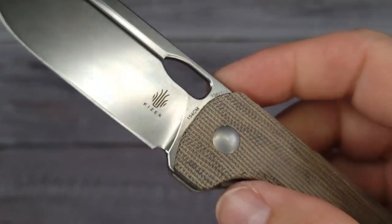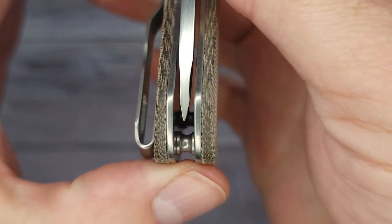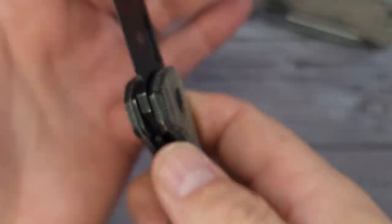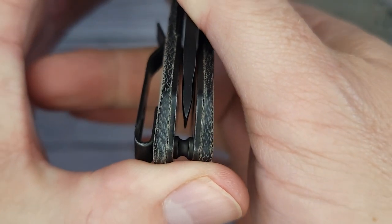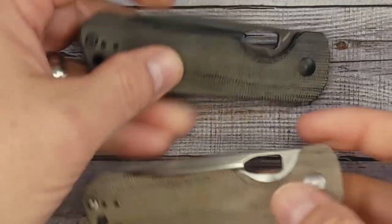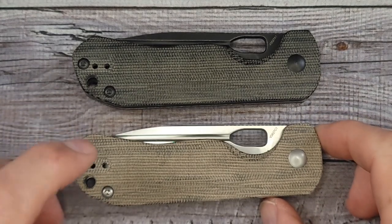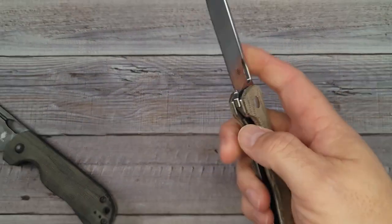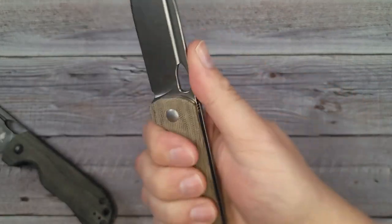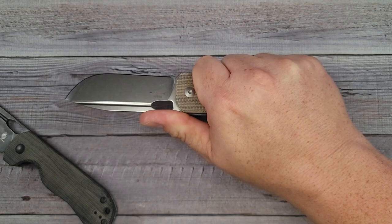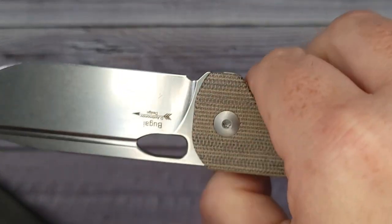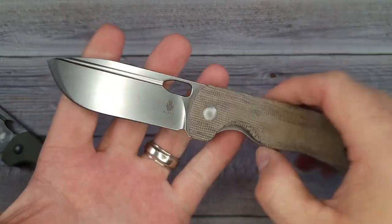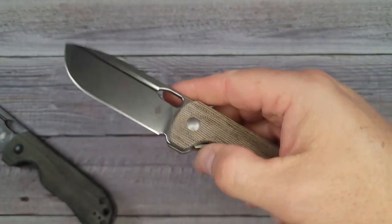They have a sharpening choil on both of them which is very nice. Your lockup is good. Is this one centered? It's pretty much centered. This one is also good lockup, good centering. It's possible it's a hair to the show side. I am very glad that they put a reversible pocket clip on it. I'm big time big on lefty love plus I carry a knife in both of my pockets. Overall first impressions out of the box, I don't have any complaints.